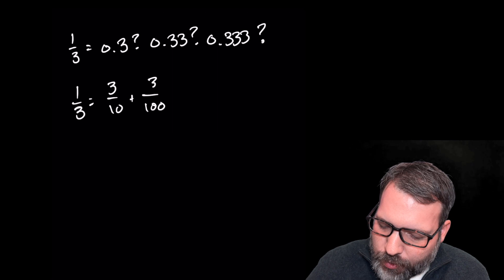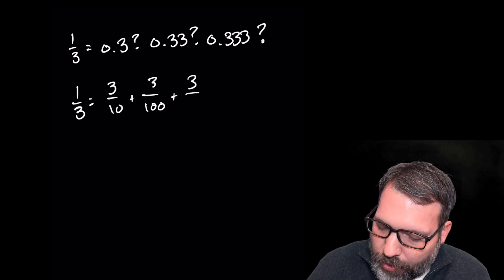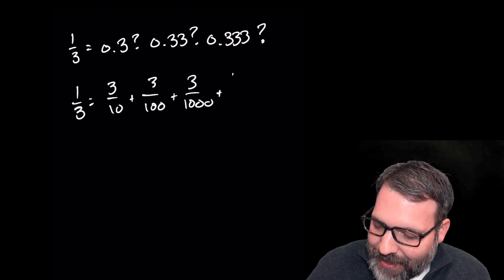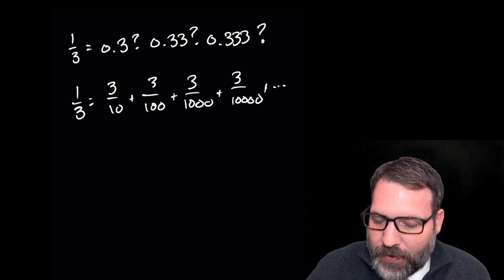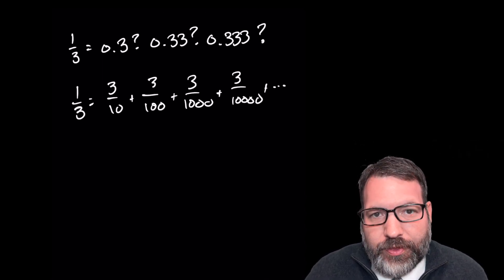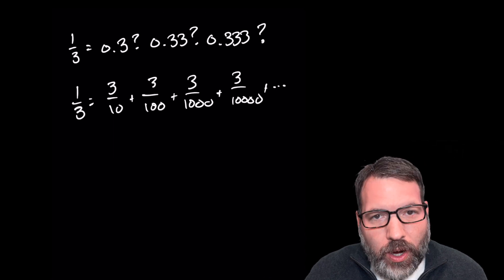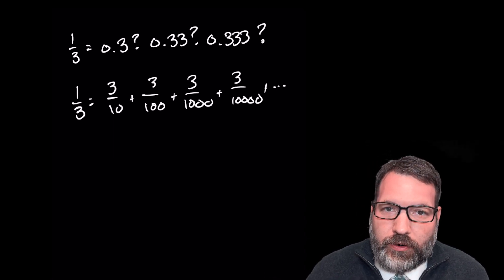A more rigorous way to write this down is to say that one-third is the same thing as an infinite sum. If we were to add infinitely many fractions — three tenths, three hundredths, three thousandths, and so on — the sum of that infinite series would be one-third.